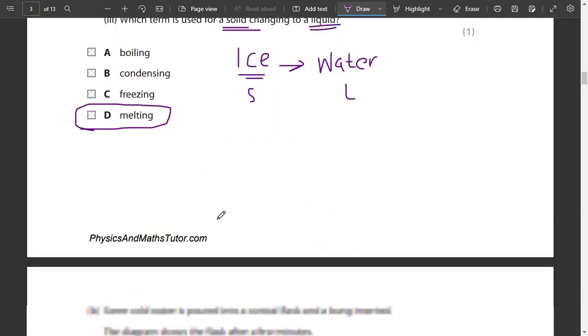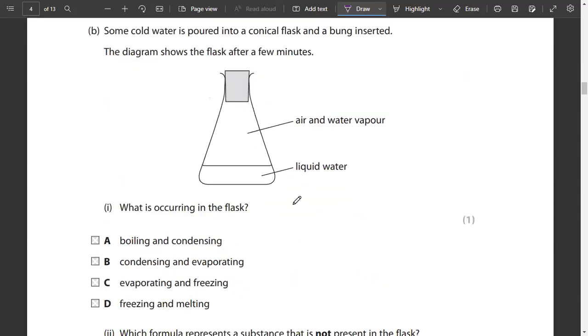Some cold water is poured into a conical flask and a bung is inserted. The diagram shows the flask after a few minutes. You have air and water vapor present, and you have some liquid water as well. So two things are happening. Liquid is turning into gas, which is known as evaporation, and then the gas is again turning into liquid when water droplets start to form. Condensation.